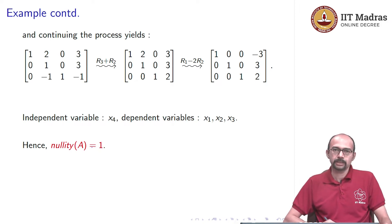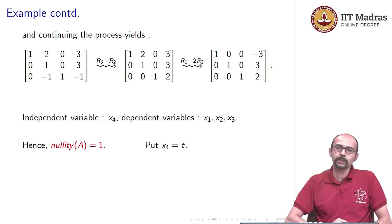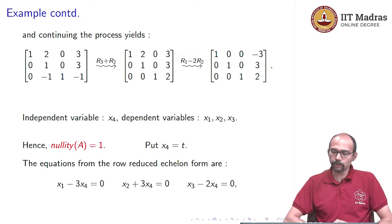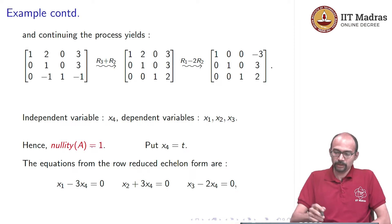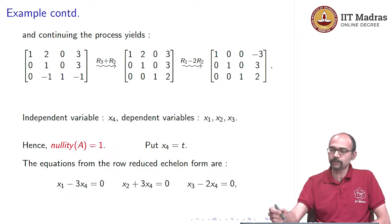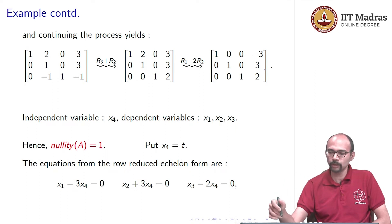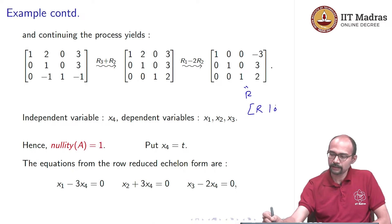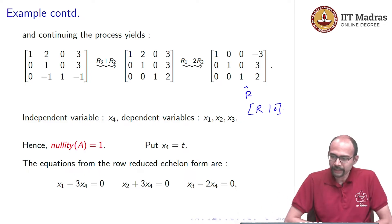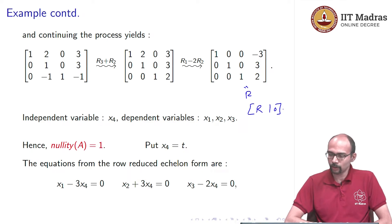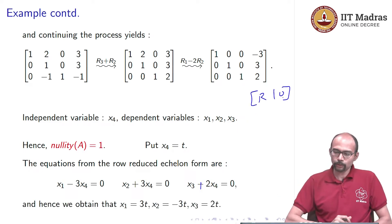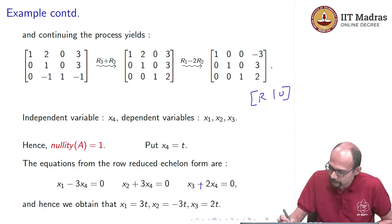For the null space, we set the independent variables equal to ti's. In this case, there is only one independent variable, so instead of t1, I have just called it t. We put x4 equals t. The equations from the reduced row echelon form are: x1 minus 3x4 equals 0, x2 plus 3x4 equals 0, and x3 plus 2x4 equals 0.